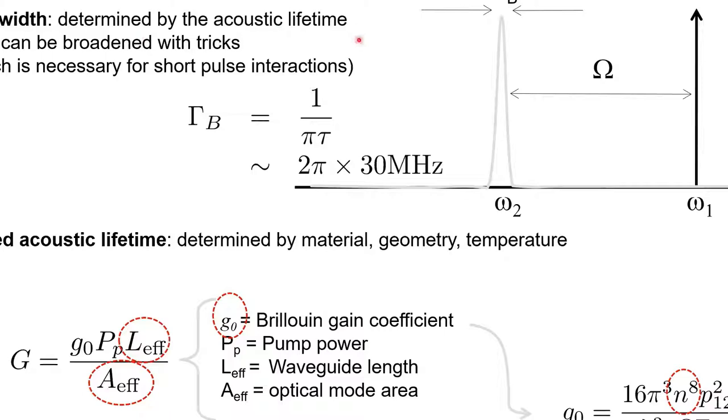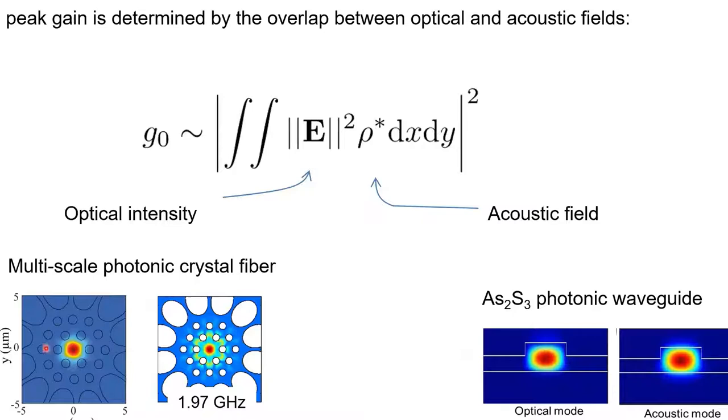What are the challenges and chances that we face and would like to use in our research? One limitation is the bandwidth, which is determined by the acoustic lifetime but can be broadened with tricks, which is necessary if you want to use short pulses. The acoustic lifetime is limited and determined by material, geometry, and temperature. So this puts us some limitations on some projects. The gain ideally we want to have is very large, and this depends on the effective length of the waveguides or fibers, the effective area, and the Brillouin gain coefficient, which depends on these parameters. I want to mention the refractive index, which goes into the power of eight, and the opto-acoustic overlap. This eta is the overlap of the optical and acoustic waves, which have to be at the same position.